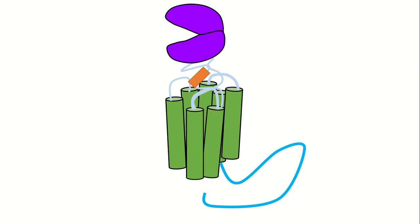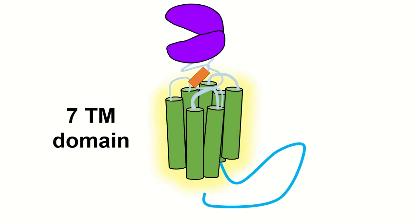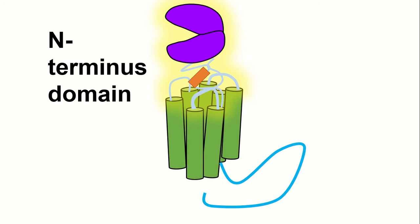The Metabotropic Glutamate Receptor Subtype 5, also known as MGluR5, is a Class C GPCR. It has 7 transmembrane helices which contain binding sites for various allosteric modulators that can potentiate or reduce the receptor's response to the excitatory neurotransmitter glutamate.